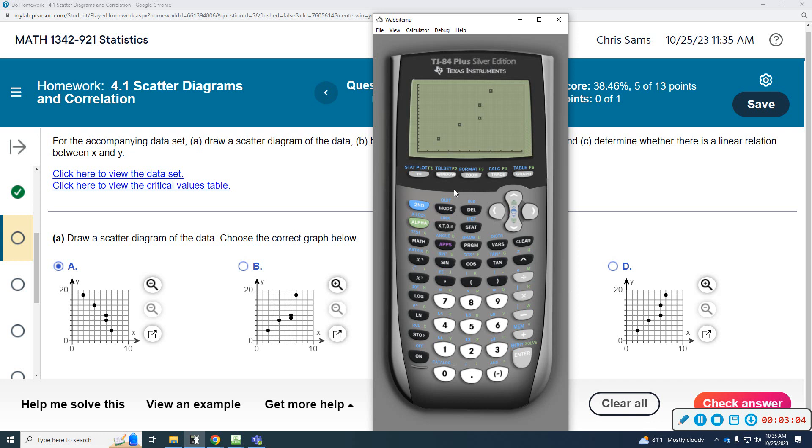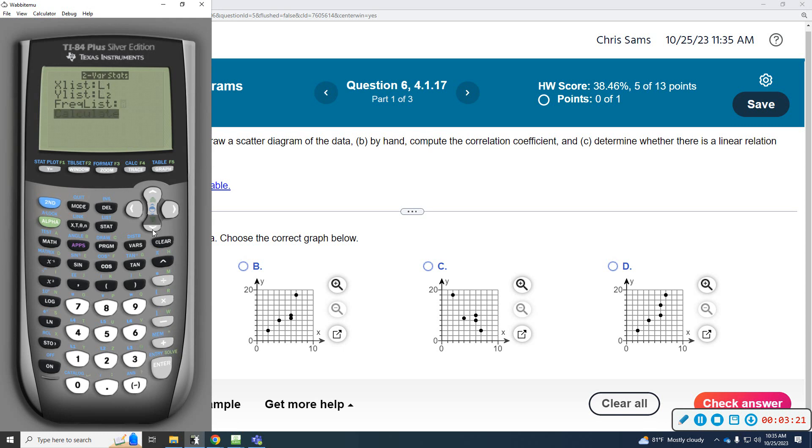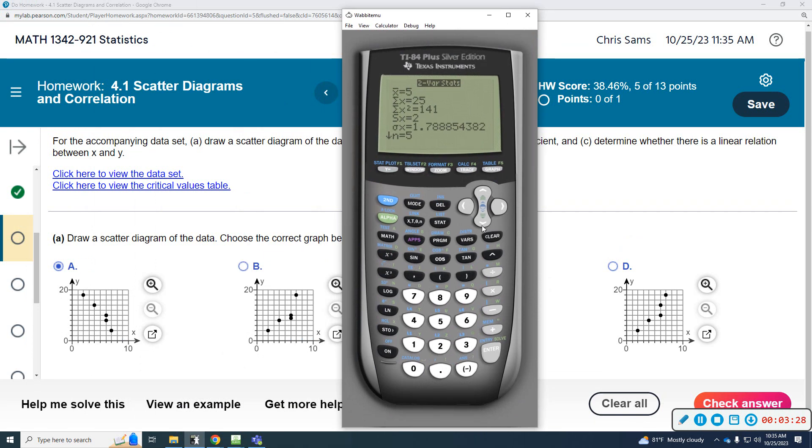Now, once you do that, we can do stat, go over to calc. Since we're doing two variables, we're going to do option number 2. It's going to give me two-variable statistics. X is in L1, Y is in L2. Arrow down and compute. It will give you some statistics. This is neat because it gives you the mean of the first one and the standard deviation, the sample standard deviation. This is the population standard deviation. Most of the time we're going to be using the sample. Then you go down, it gives you the mean of the second data set and its standard deviation, the sample and the population.